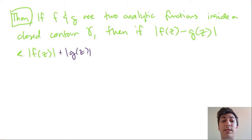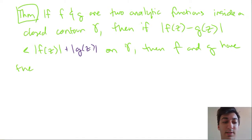So if f and g are two analytic functions inside this contour gamma, then if |f - g|, the modulus is less than the sum of the moduli of f and g, then—I'm sorry—on gamma, so we only have to satisfy on gamma, then f and g have the same number of zeros inside gamma.